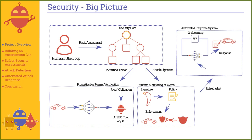Runtime monitoring might take the form of an intrusion detection system, or an explanation of what is going on in the system. Because as the system is autonomous and has connectivity, we need to be able to identify attacks. Finally, as an extra thing we wanted to investigate, we wanted an automated response system. When you have an automated system under attack, not only does it need to operate autonomously, it needs to be able to respond to attacks autonomously. We've been working on some strategies to do this.